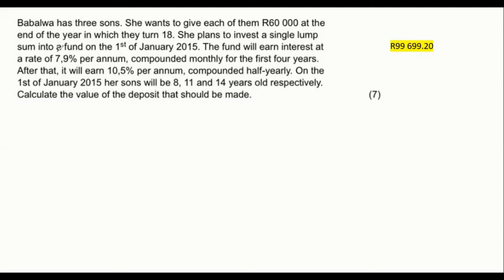She plans to invest a single lump sum into a fund on the 1st of January 2015. The fund is going to earn interest at different rates. On the 1st of January 2015, her sons will be eight years old, eleven years old, and fourteen years old. Calculate the value of the deposit. I can imagine that a lot of you reading this are thinking 'what?' — this looks terrible. But I can assure you that this is not actually that bad at all.